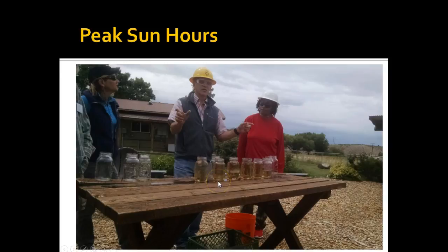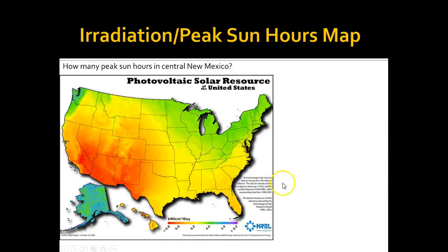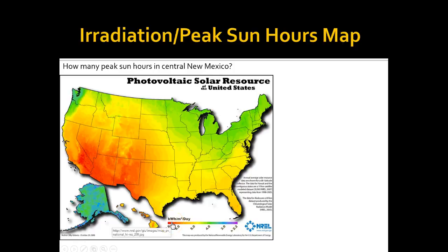Hopefully that helps you visualize it a little more. Now, you don't normally see irradiance maps — normally you'll see irradiation maps. As it turns out, you can actually pretty easily determine peak sun from an irradiation map. It's a really easy calculation. So let's do a little sample problem: if I want to know how many peak sun hours are in central New Mexico, and all I have is this map indicating kilowatt hours per meter squared per day, how can I determine that?